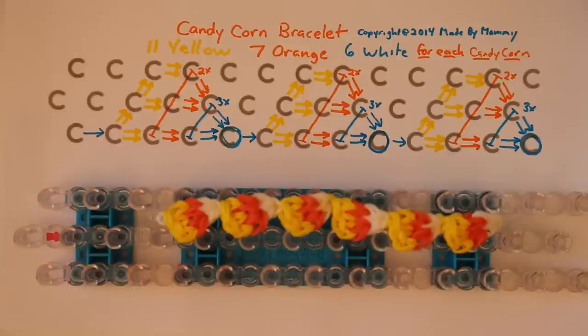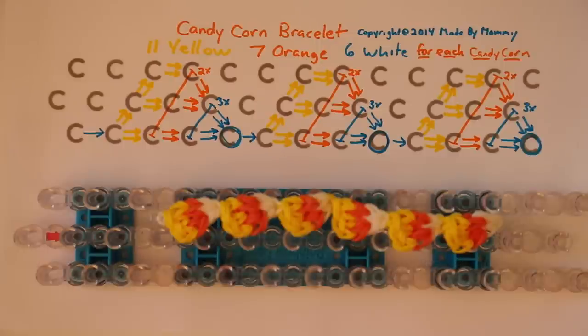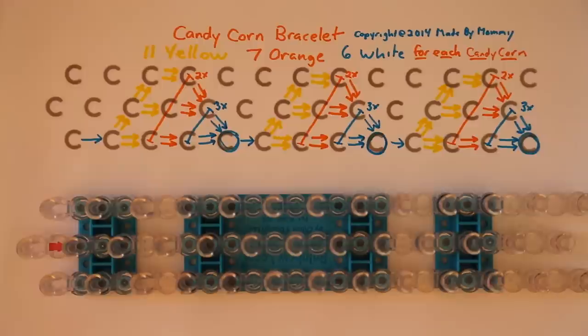Hi, this is Kim from Made by Mommy, and today I'm going to teach you how to make the Candy Corn Bracelet. The Candy Corn Bracelet requires 11 yellow rubber bands, 7 orange, 6 white for each piece of candy corn. Now for me to wear a bracelet, I like to make 6 candy corns.